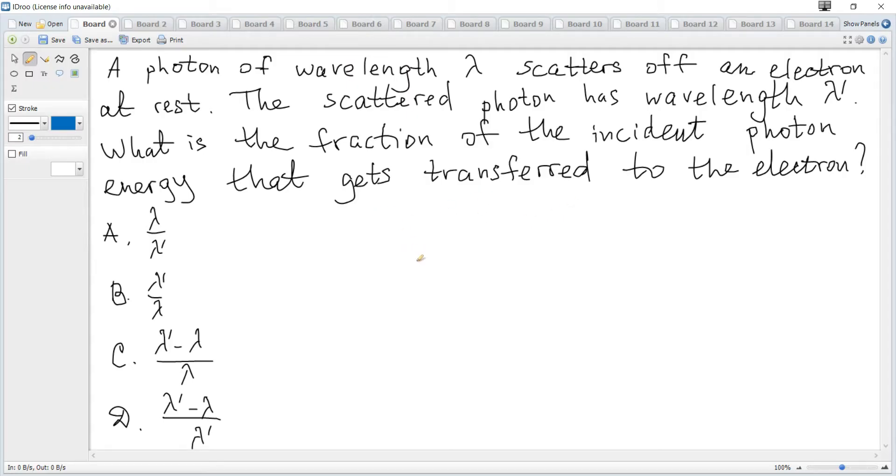We know that the energy of a photon is hc over lambda in terms of wavelength. So before, a photon energy is hc over lambda, and after, energy is hc over lambda prime.